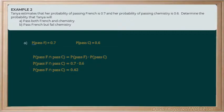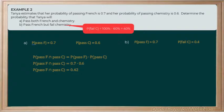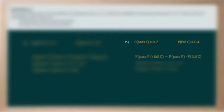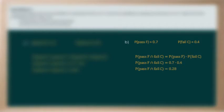The second part asks: what's the probability of her passing French but failing chemistry? We already know the probability of passing French is 0.7. For the probability of failing chemistry: if there's a 60% chance she passes chemistry, then 100% minus 60% means she has a 40% chance of failing. So the probability of failing chemistry is 0.4. Using the same equation, the probability of passing French and failing chemistry is 0.7 times 0.4, which gives us 0.28.